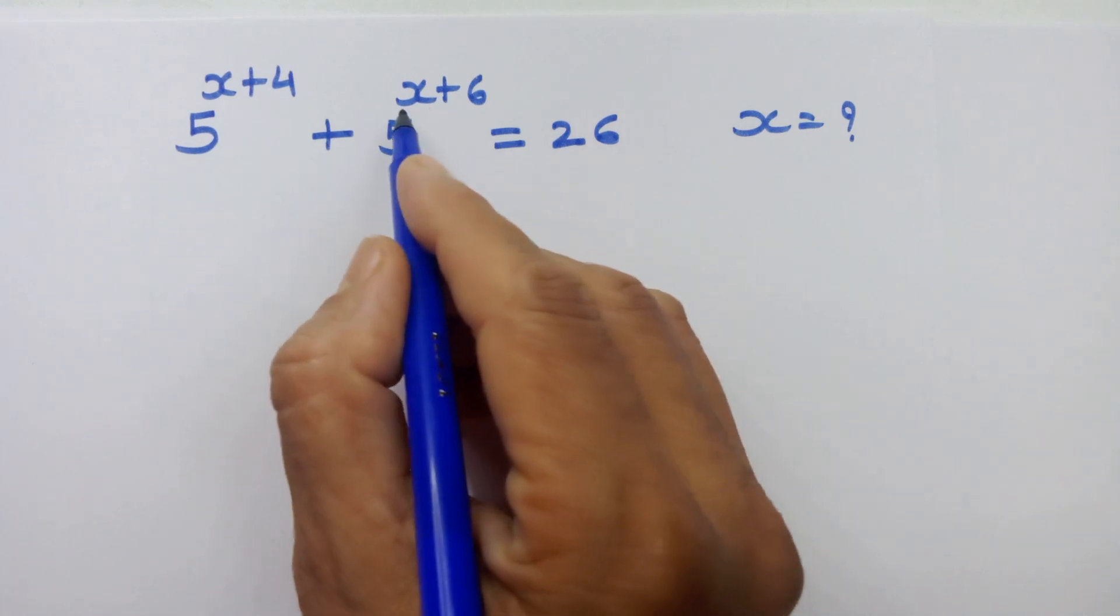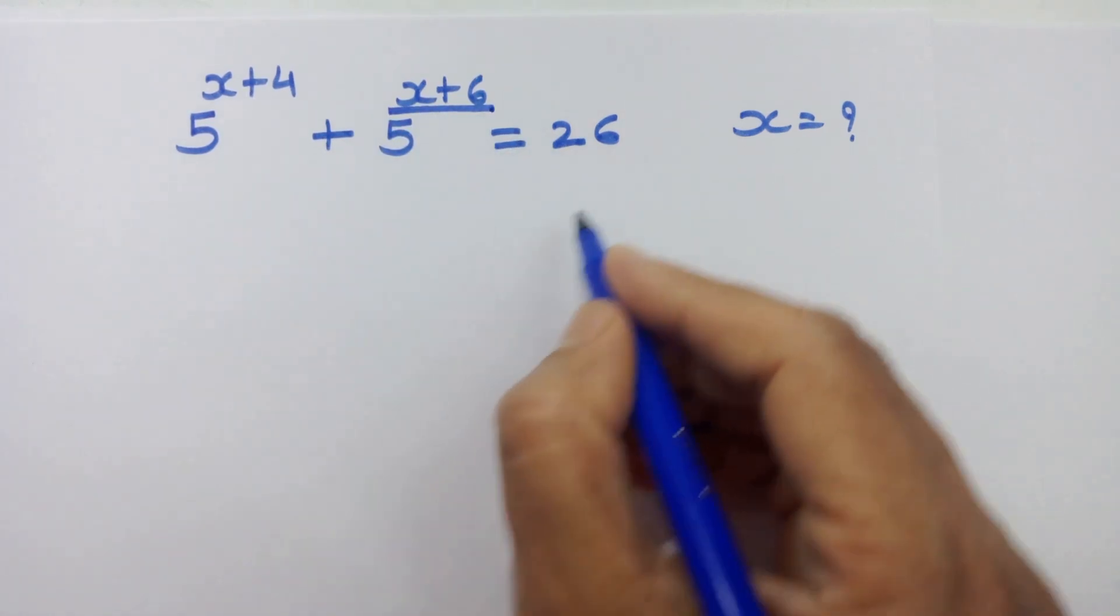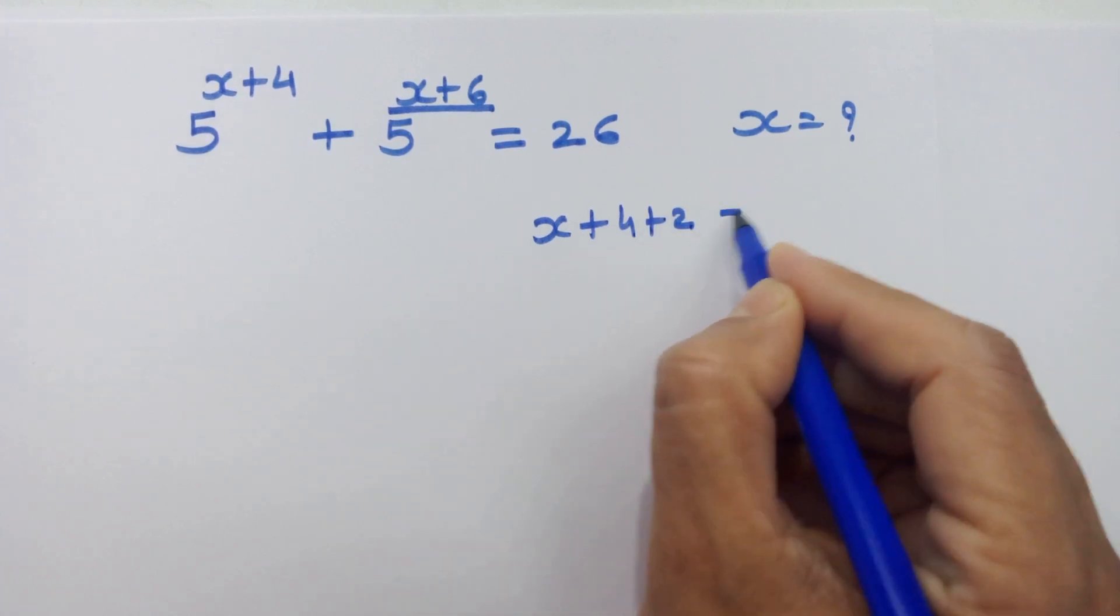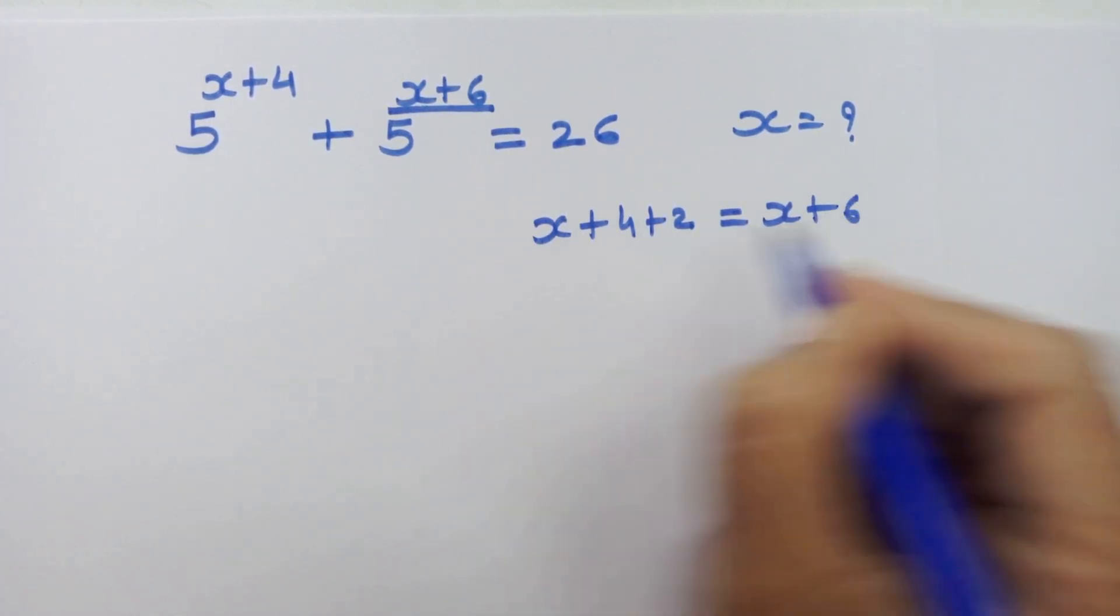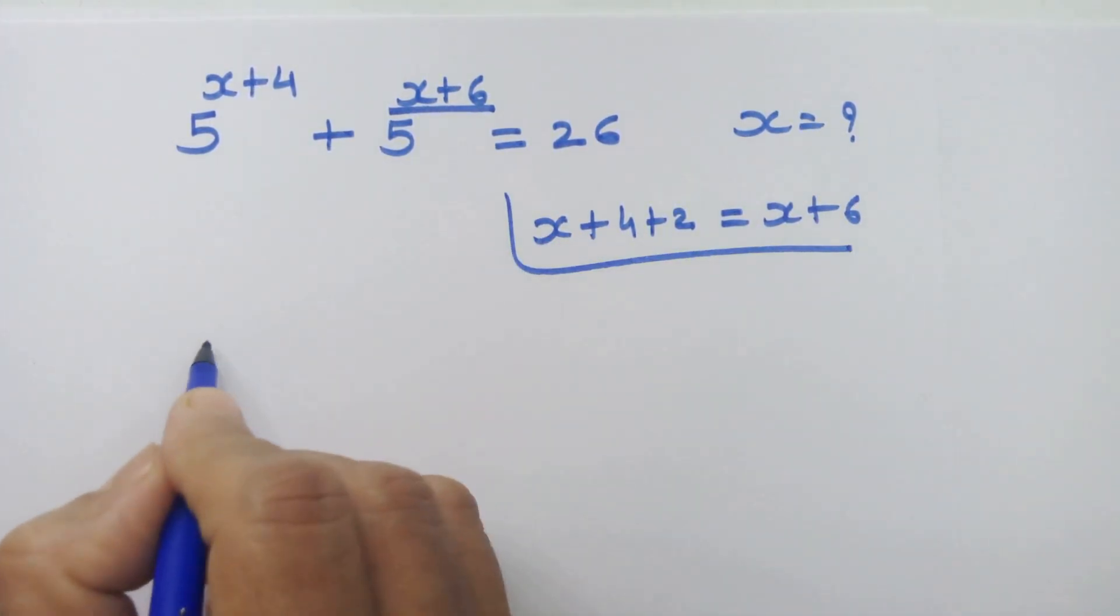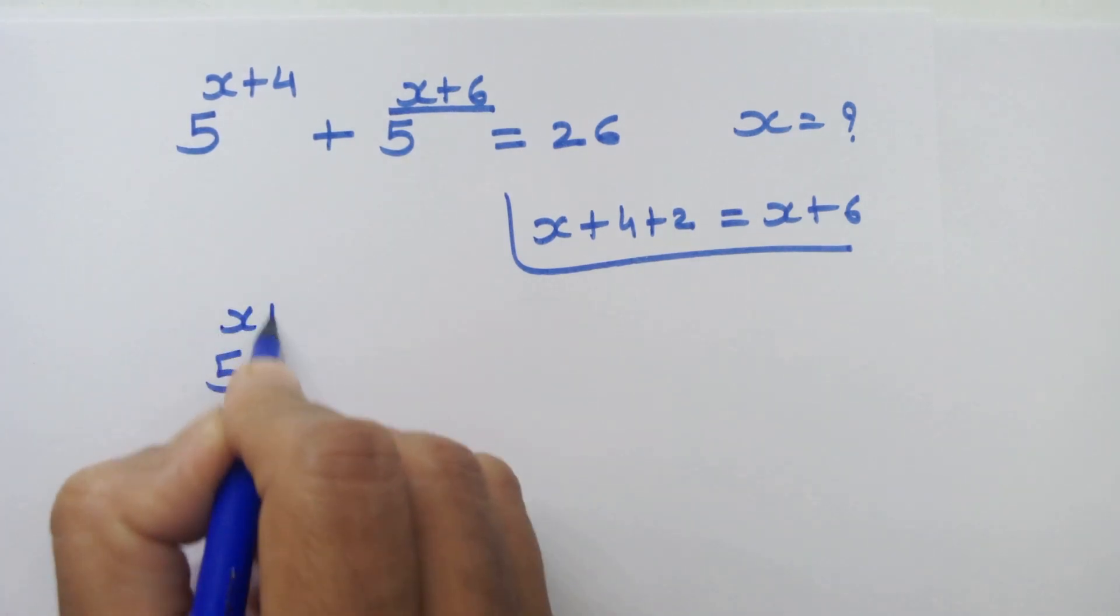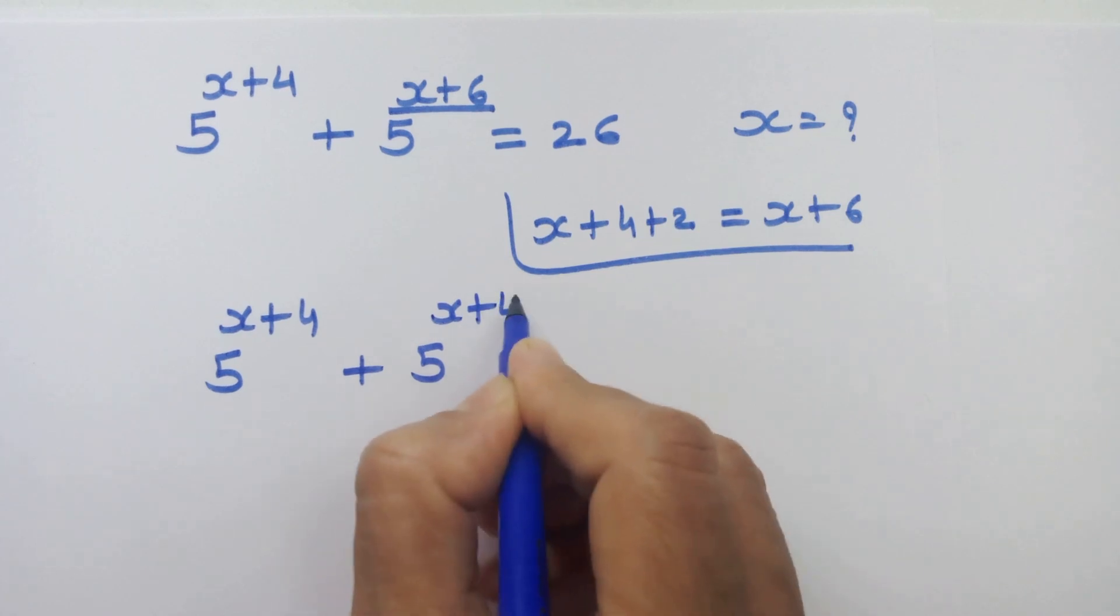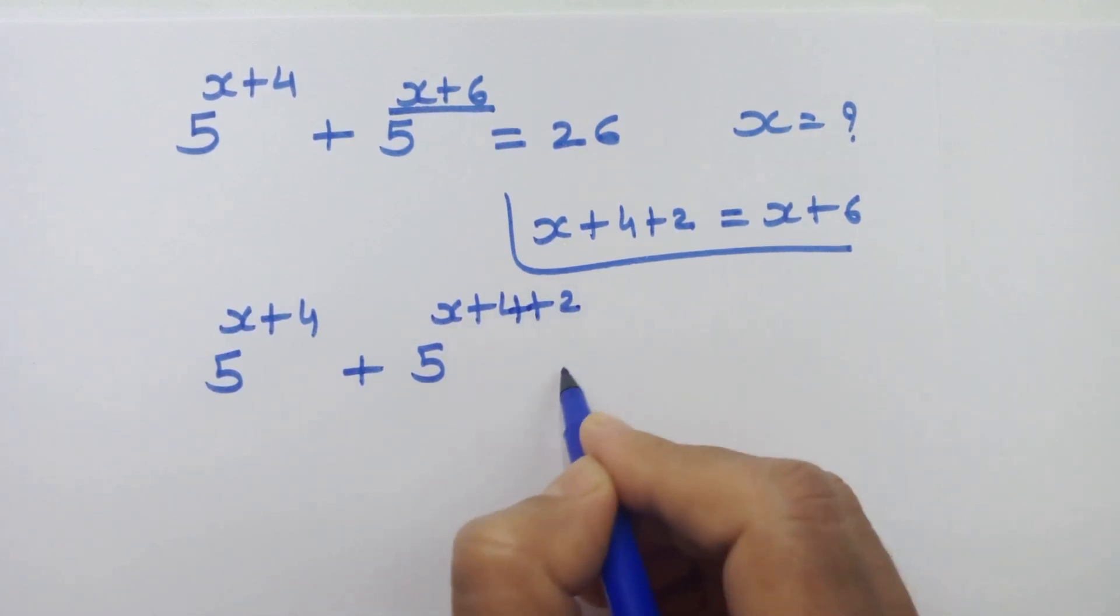Now what we are going to do is, let's focus on this power. Can we write x plus 4 plus 2 instead of x plus 6? Yes we can. So let's do it. 5 raise to x plus 4 plus 5 raise to x plus 4 plus 2 is equal to 26.